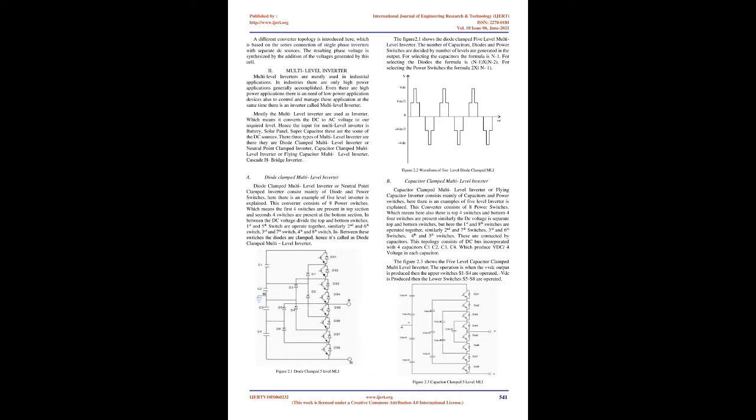Mostly the multi-level inverter is used as an inverter, converting DC to AC voltage to the required level. Hence the input for the multi-level inverter is battery, solar panel, or super capacitor — these are the DC sources. The three types of multi-level inverter are: diode clamped multi-level inverter (or neutral point clamped inverter), capacitor clamped multi-level inverter (or flying capacitor multi-level inverter), and cascade H-bridge inverter.